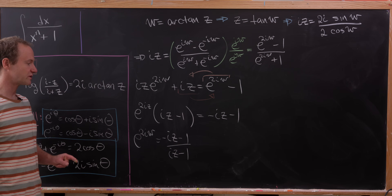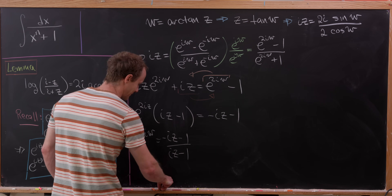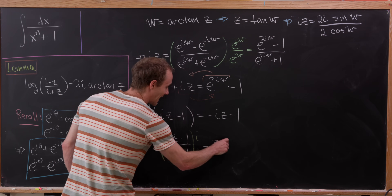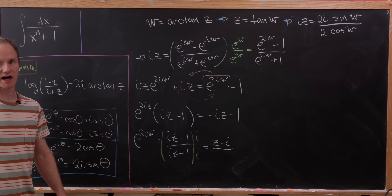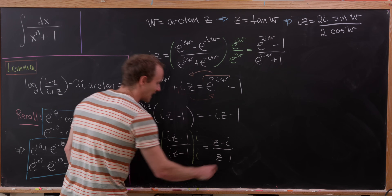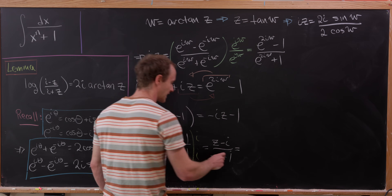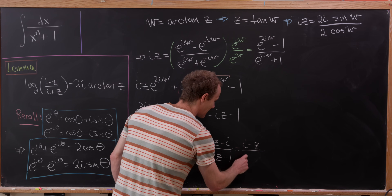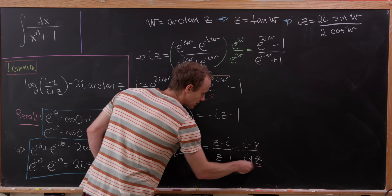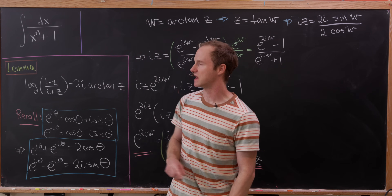At this stage, we multiply numerator and denominator by i. In the numerator we get z minus i, since minus i times i gives plus 1. In the denominator we have minus z minus i. Factoring out a minus sign from both, we get i minus z on top and i plus z on the bottom. We now have e to the 2iw equal to this rational function, and taking logarithms and rearranging takes us exactly to our formula: w equals 1 over 2i times the log of (i plus z) over (i minus z).